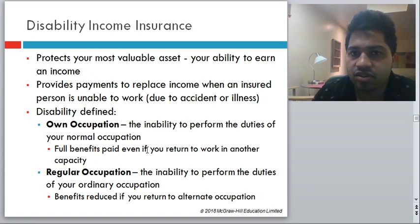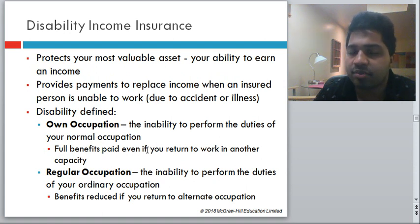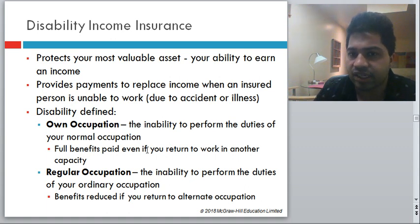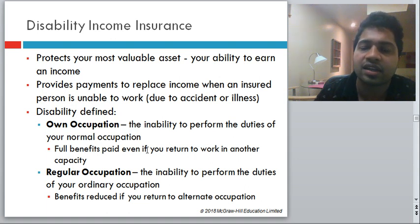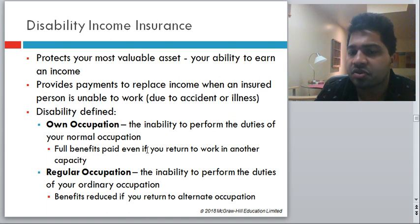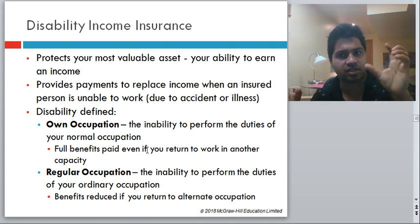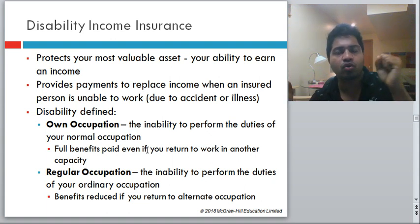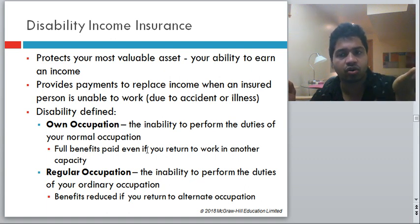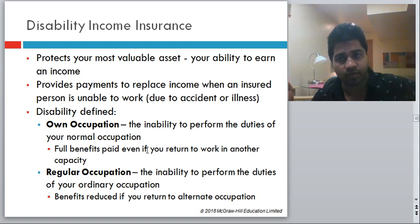Disability insurance protects your most valuable asset — your ability to earn income — by providing payment to replace income when you are unable to work due to accidents or illness. There are two main definitions of disability. Own occupation: inability to perform the duties of your normal occupation; full benefits are paid even if you return to work in another capacity. Regular occupation: inability to perform the duties of your ordinary occupation; benefits are reduced if you return to an alternative occupation.